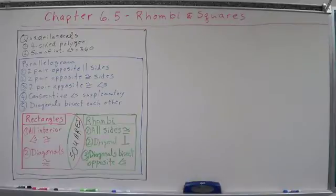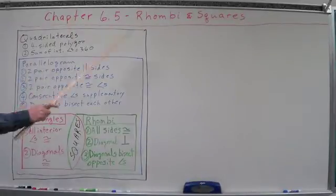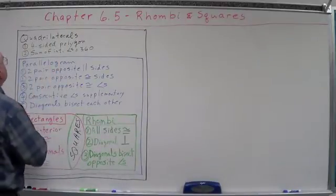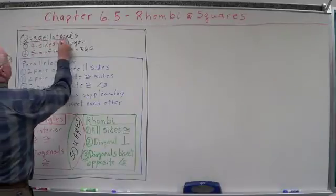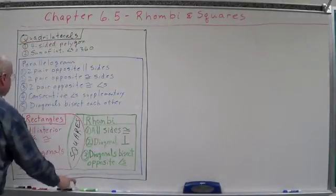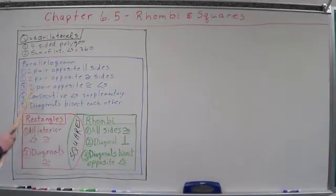We've got our Venn diagram up here that describes what's going on. In the big box, our universe is quadrilaterals. Quadrilaterals have two characteristics: they have four-sided polygons, and the sum of the interior angles equals 360.